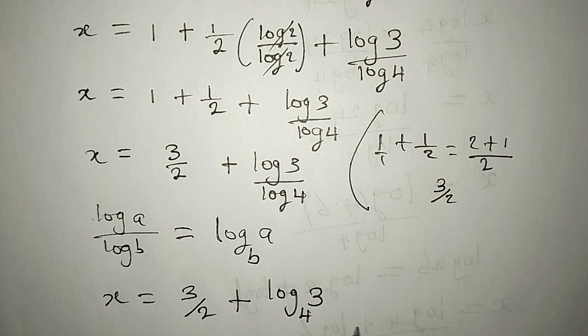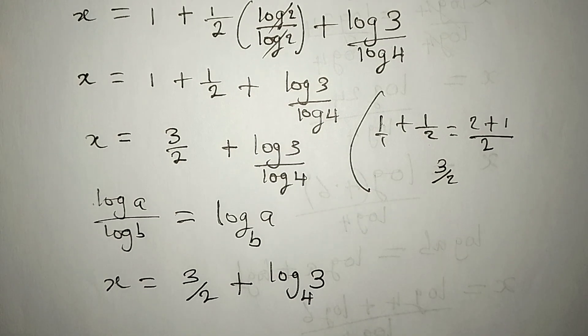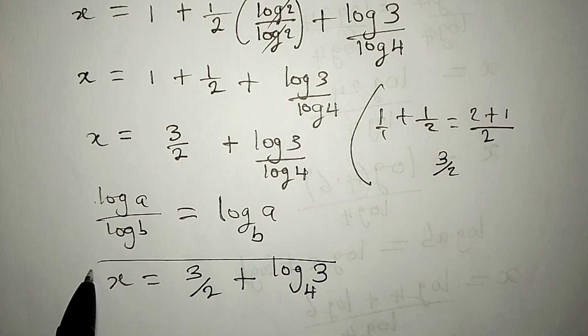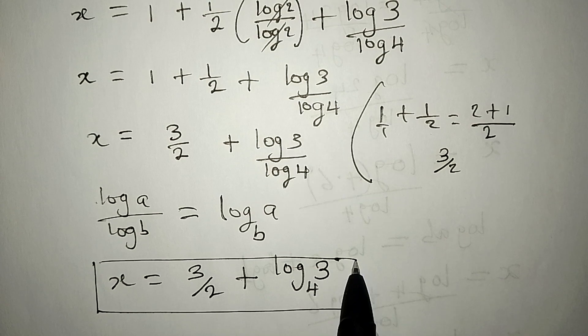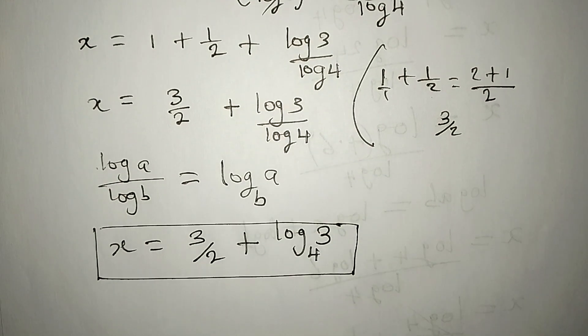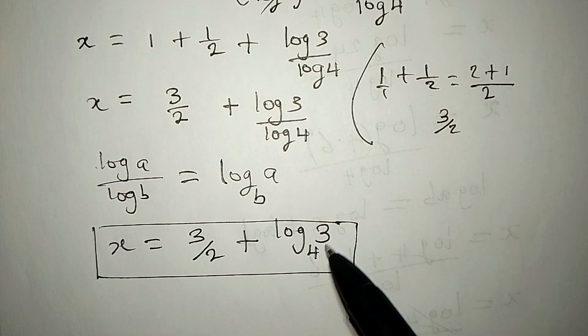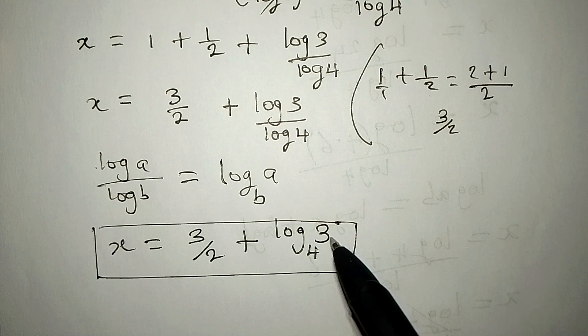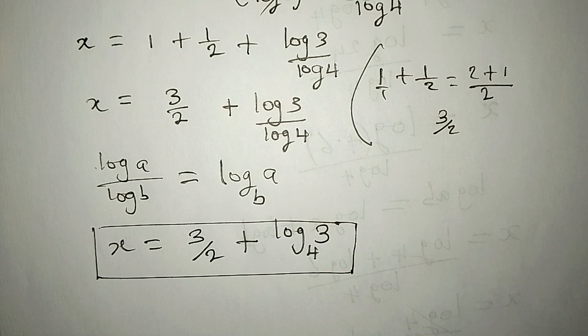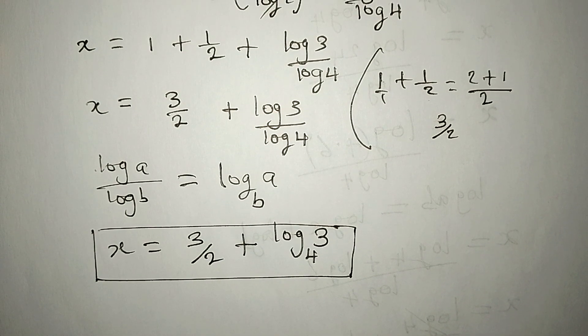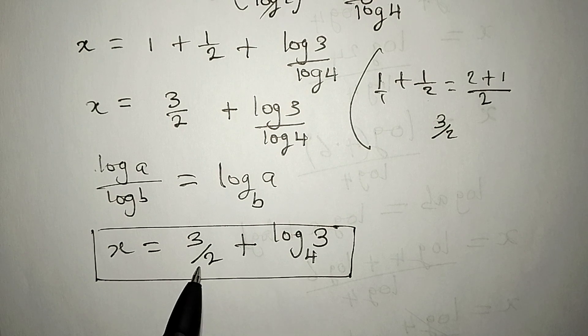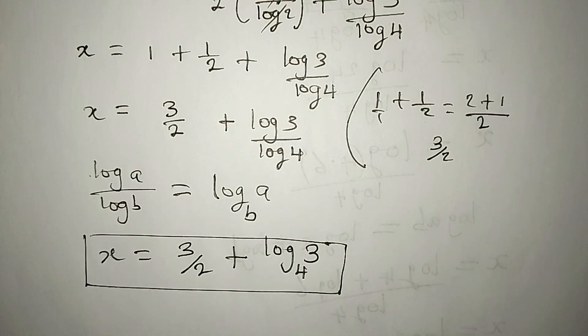So, this becomes the value of x that we are looking for. And, by the way, you can press your calculator to get the value of this. You press log 3 to base 4 and it gives you this. Or, by the way, I think this is where you stop. You can equally get this in decimal. And then, you add up to get what you're looking for.